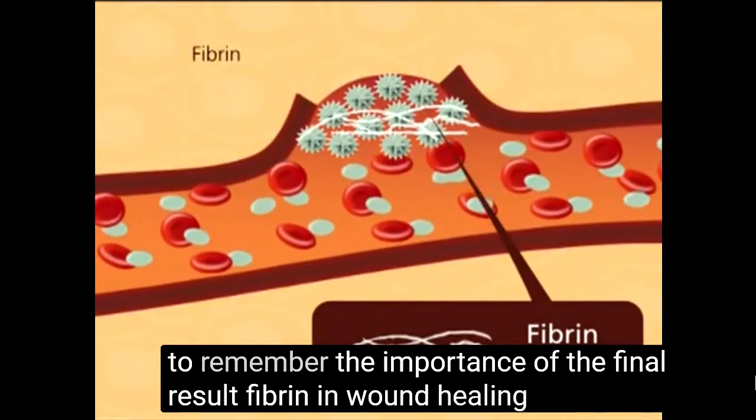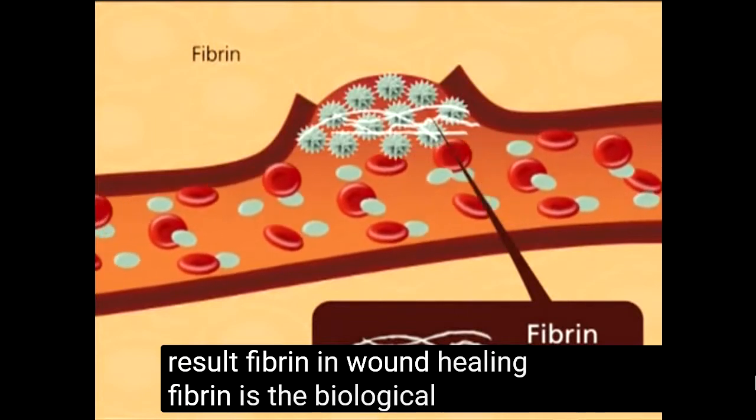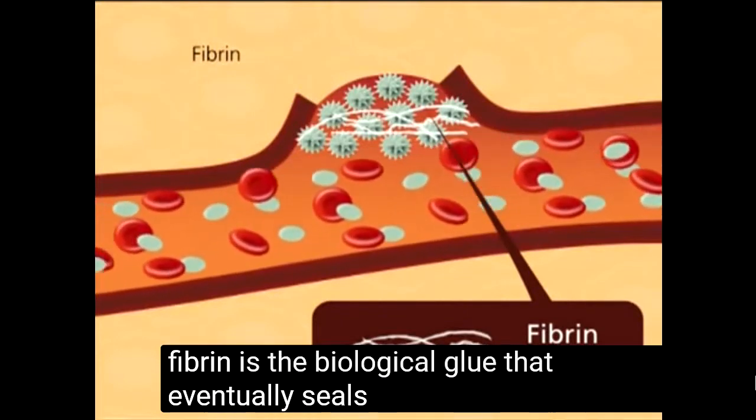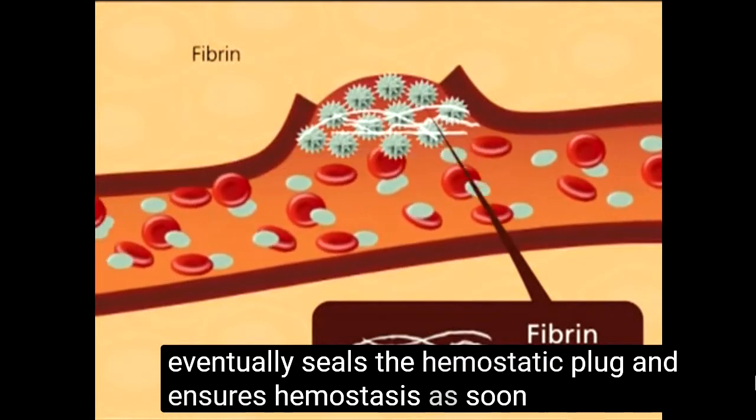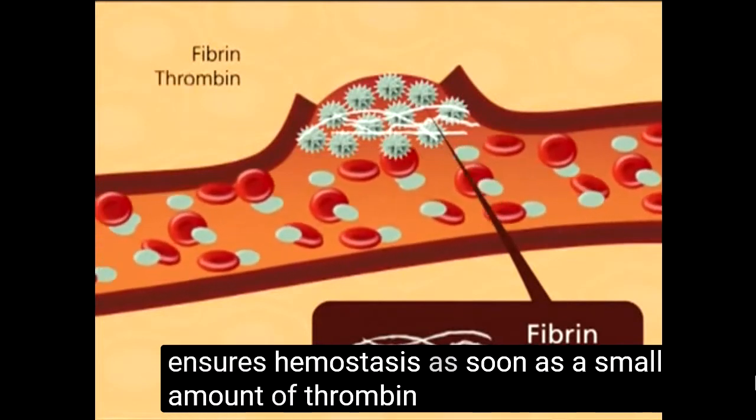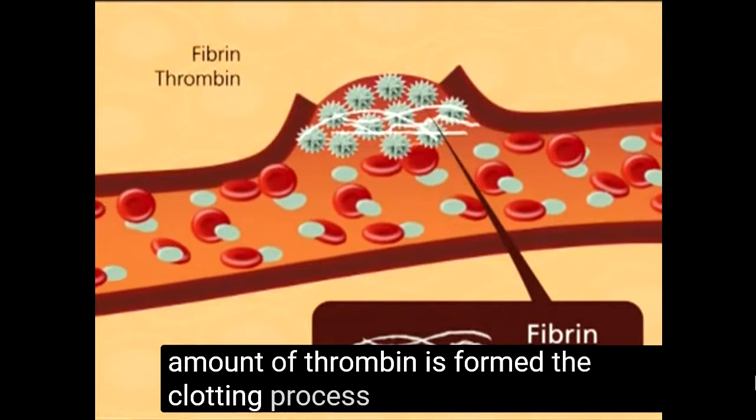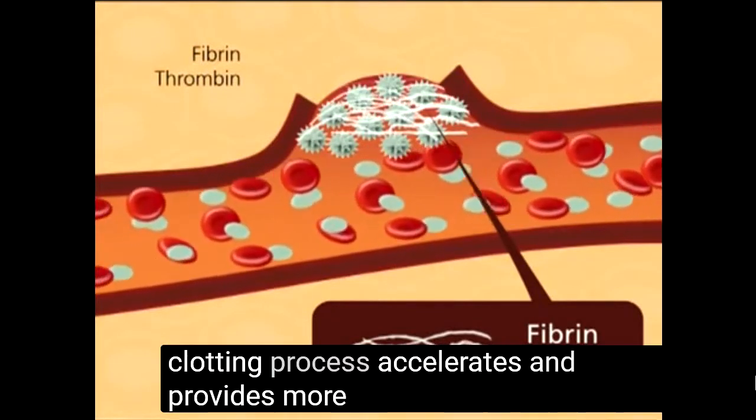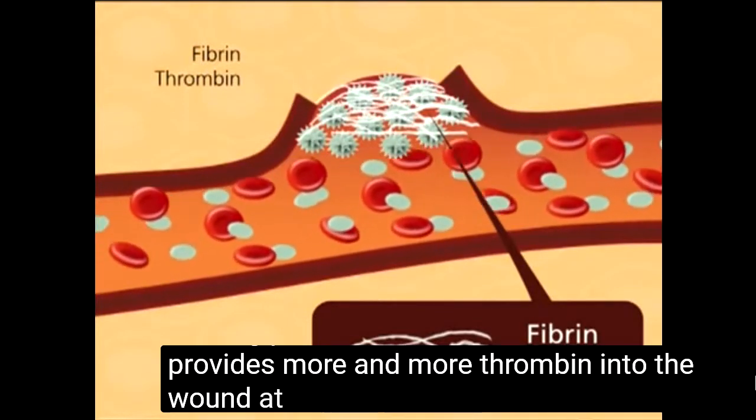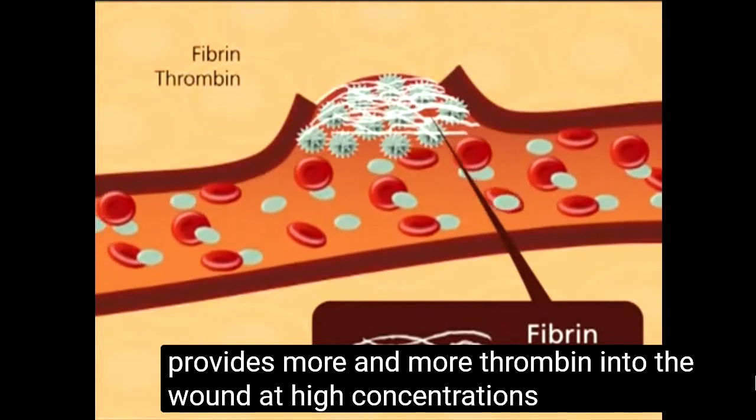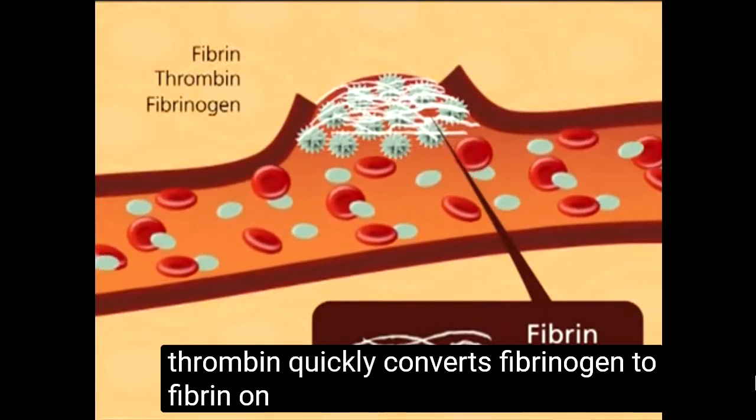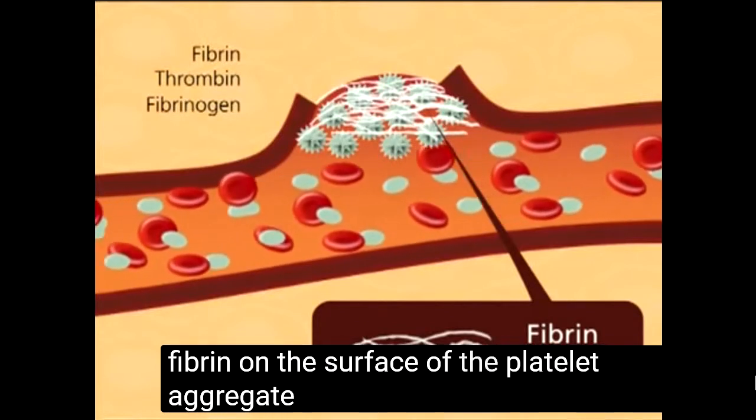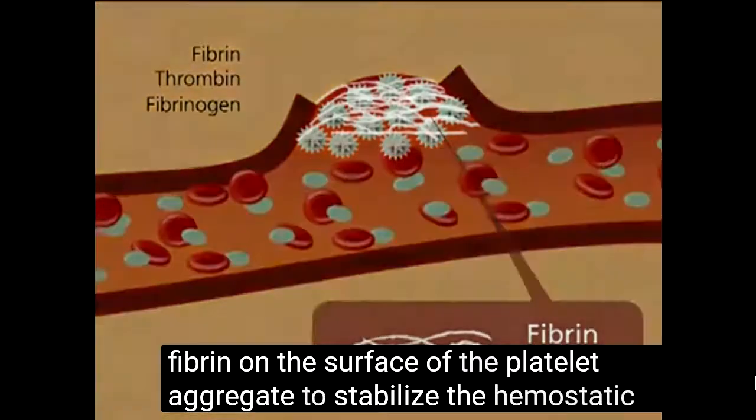Fibrin in wound healing: Fibrin is the biological glue that eventually seals the hemostatic plug and ensures hemostasis. As soon as a small amount of thrombin is formed, the clotting process accelerates and provides more and more thrombin into the wound. At high concentrations, this thrombin quickly converts fibrinogen to fibrin on the surface of the platelet aggregate to stabilize the hemostatic plug.